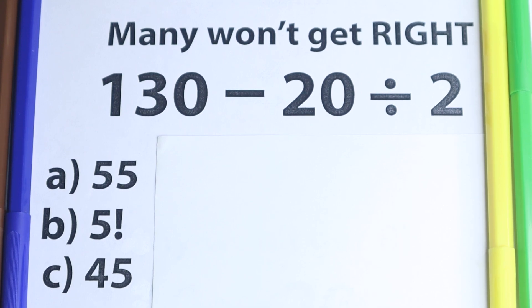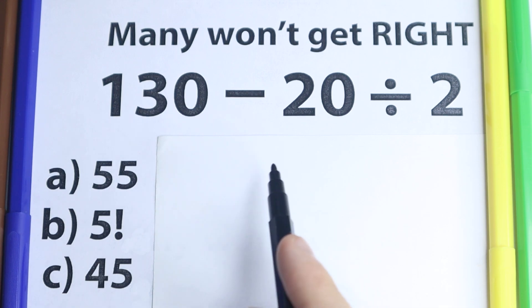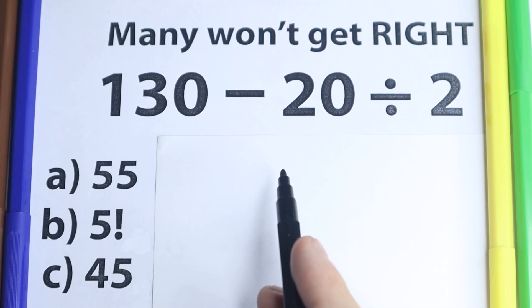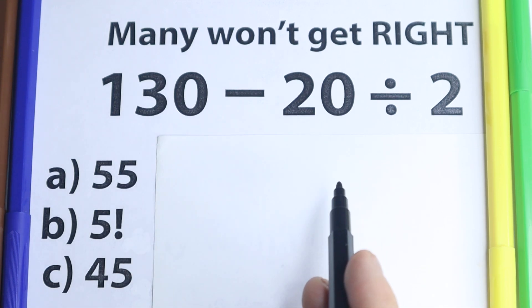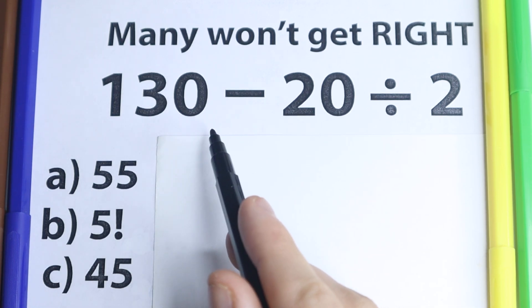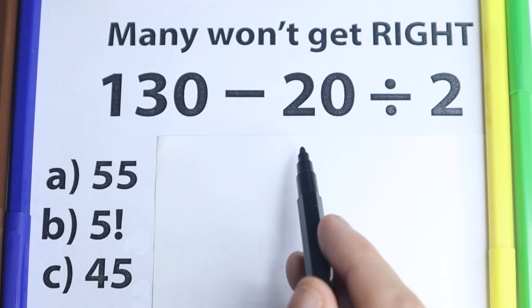Hello everyone! Happy to see you here. In this video we are going to solve a very simple algebra problem, a very simple math problem, and you are going to be surprised that many of you are actually going to get this wrong. I don't want you to use a calculator here, because here is the problem. As you can see, 130 minus 20 divided by 2.